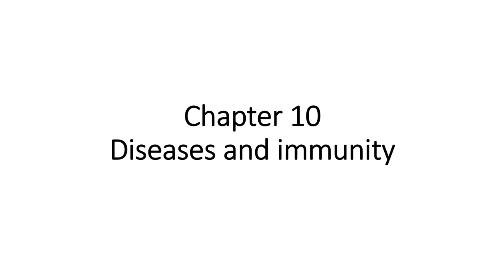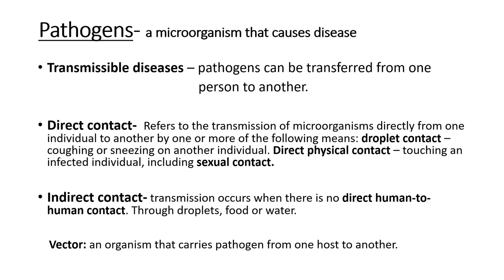Hello guys, welcome back to another topical video by Designing GI DCSC Biology. Today we are going to enter a new chapter — Chapter 10, which is Diseases and Immunity. We are going to go through what pathogens are. A pathogen is basically a microorganism that can cause disease, or it can be described as a disease-causing organism.